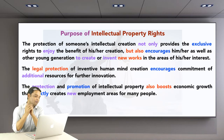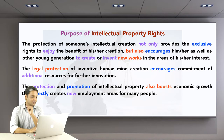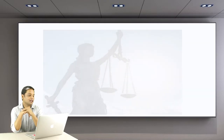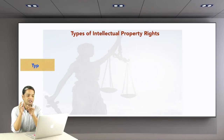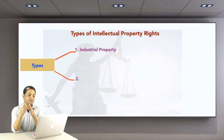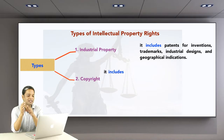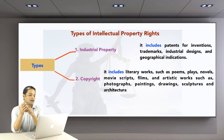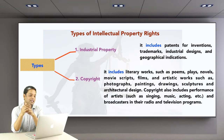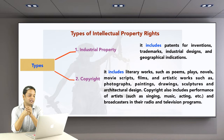Types of intellectual property rights: primarily, intellectual property rights are categorized as industrial property and copyright. Industrial property includes patents for innovations, trademarks, industrial designs, and geographical indications. Copyright includes literary works such as poems, plays, novels, movies, and scripts; artistic works such as photographs, paintings, drawings, sculptures, and architectural design; performances of artists such as singing, music, and acting; and broadcasters in their radio and television programs.